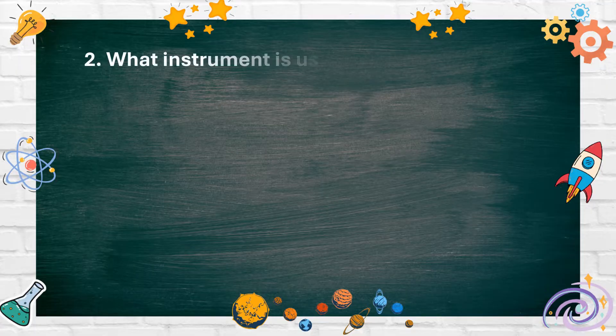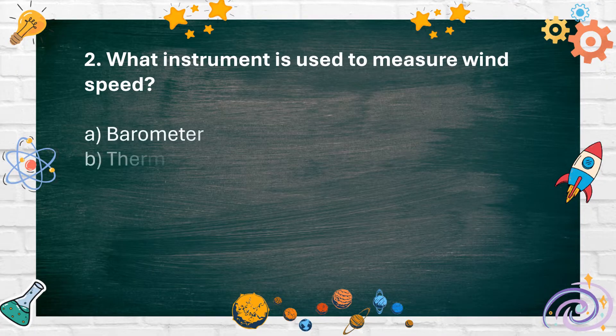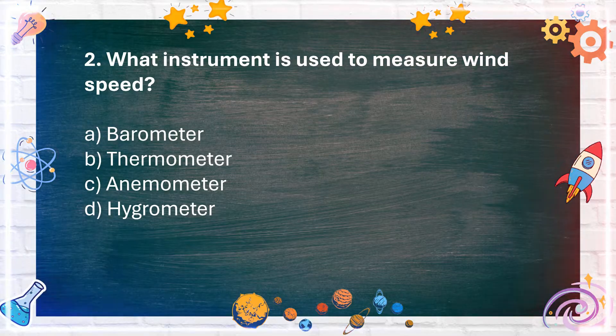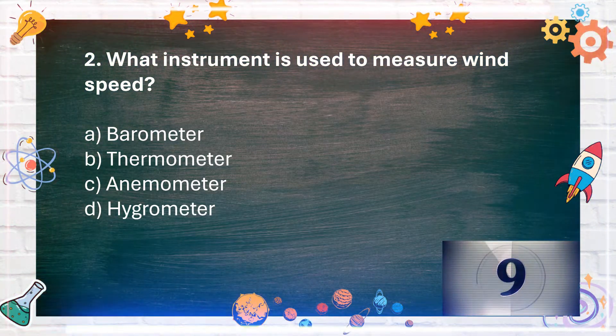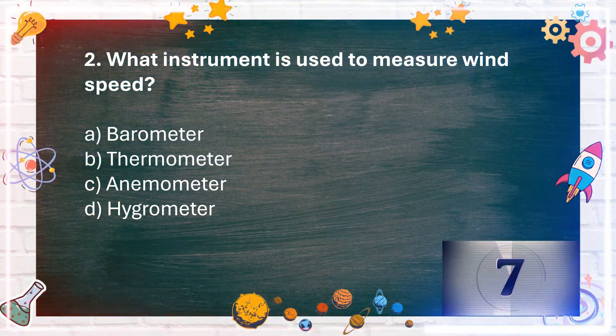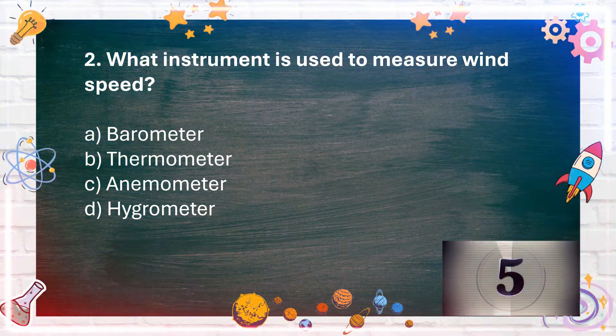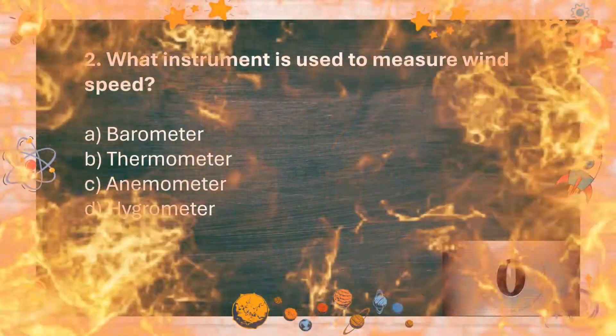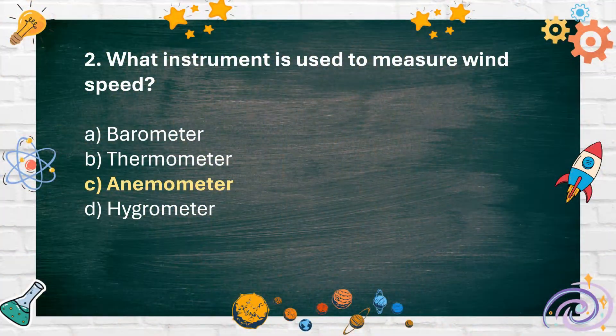Number 2: What instrument is used to measure wind speed? A. Barometer, B. Thermometer, C. Anemometer, D. Hygrometer. The answer is C. Anemometer.